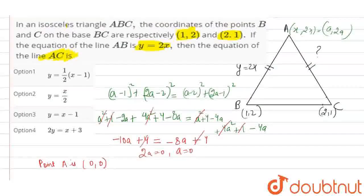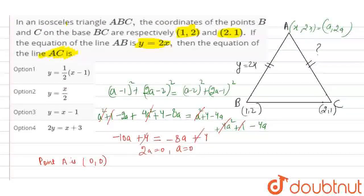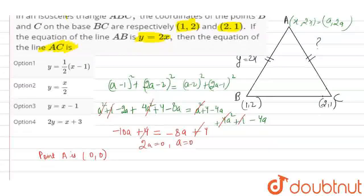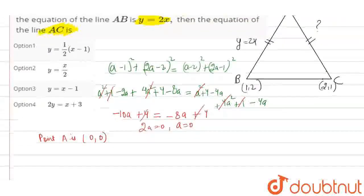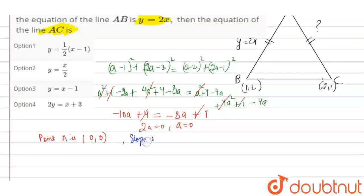We can find the equation of line AC by first finding the slope of AC. The slope of AC is y2 minus y1 divided by x2 minus x1, which equals 1 minus 0 over 2 minus 0, equals 1/2.